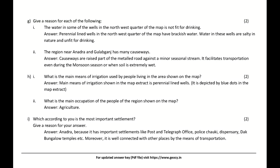Which is the most important settlement? Give a reason. Answer: Anadra, because it has important facilities like a post and telegraph office, police chowky, dispensary, and dak bungalow temples. Moreover, it is well connected with other places by means of transportation.